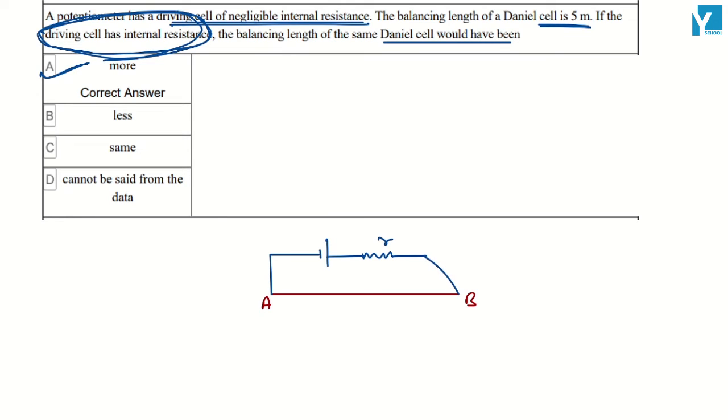On the lower line, the Daniel cell, which you need to find the balancing length for. This is the cell. Now going to be a galvanometer and here it goes to the jockey.